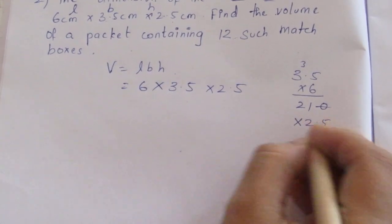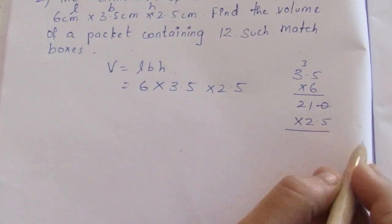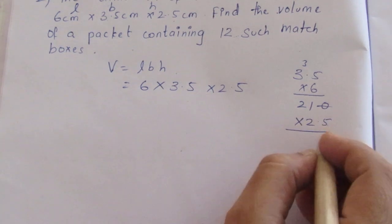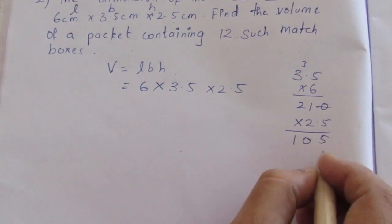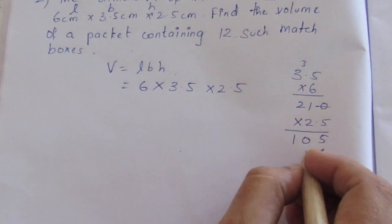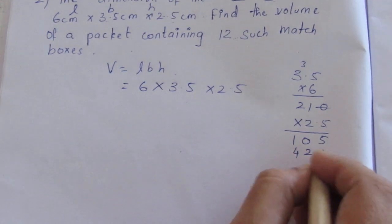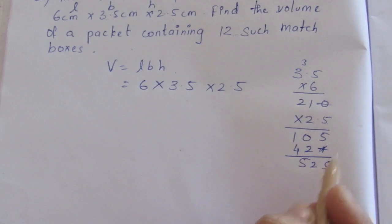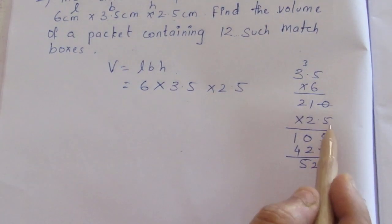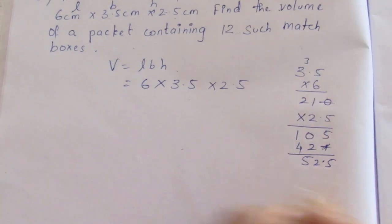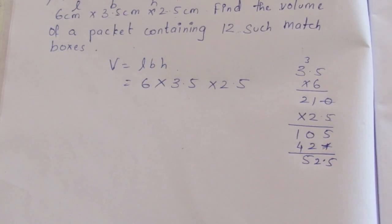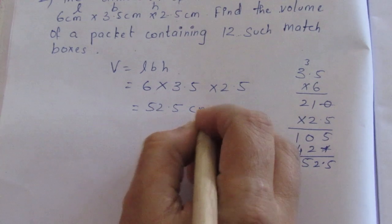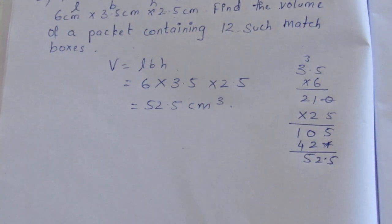Now we multiply by 2.5. 21 × 2.5, counting the decimal points, gives us 52.5 cm³. This is the volume of one matchbox.